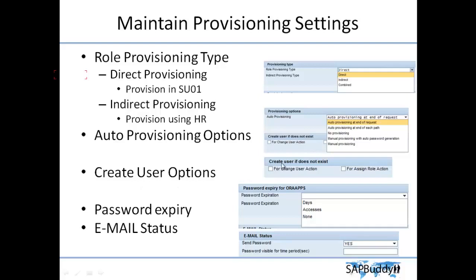Next is creating user options — create user if it does not exist. For example, for a change user action you created a request but the user does not exist in the back-end system. In that case the system will create the user automatically. For role action — if you are adding a new role but the user does not exist, the system will also create the user in the back-end system automatically.